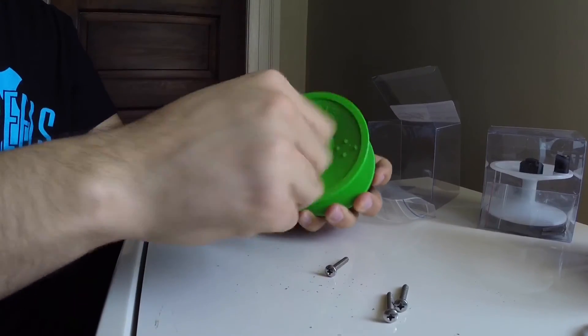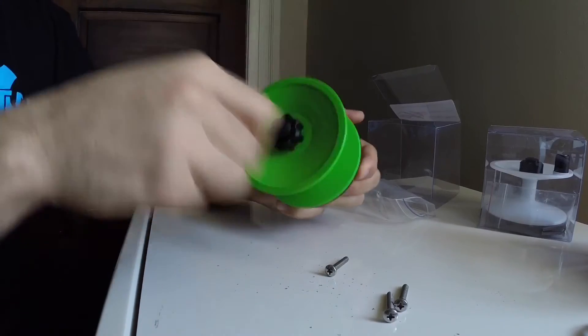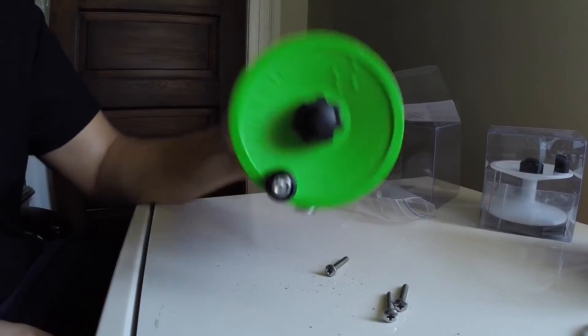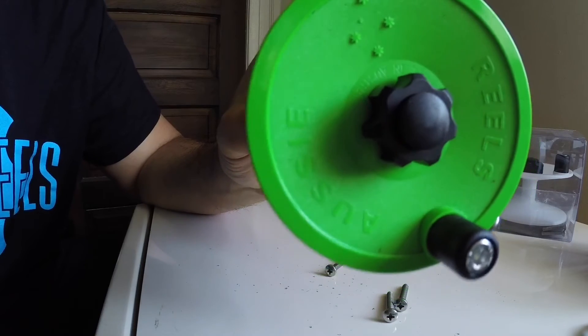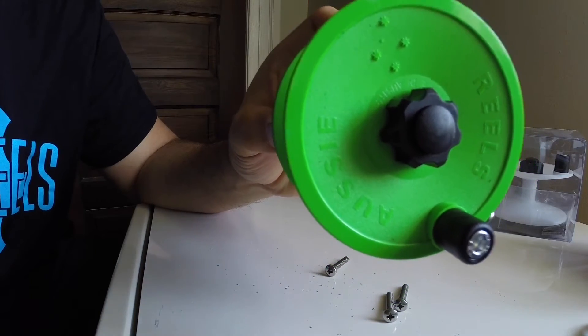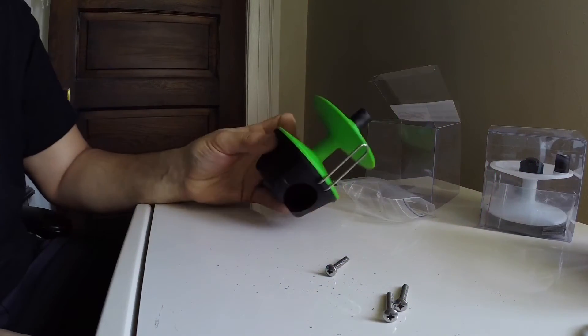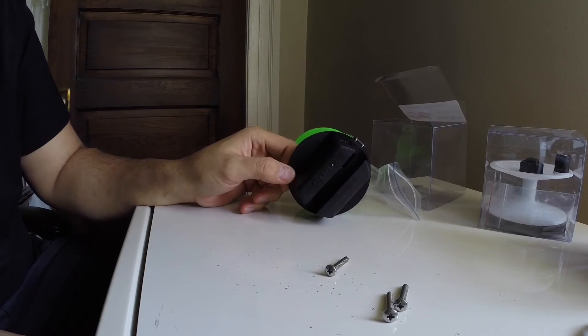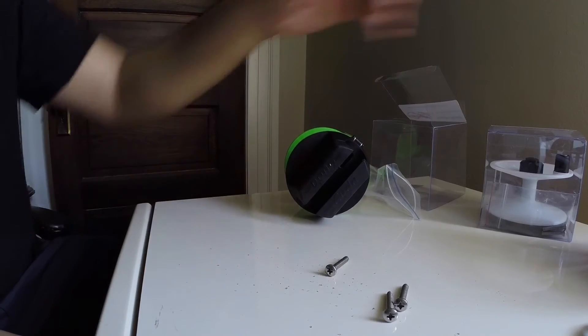So our reels have a five-year warranty on them. Anything goes wrong in the first five years, we've got you covered. If something were to happen after the five years, we're here with easily accessible parts. We can either give you a great discount on any of the parts. Anything goes wrong on your reel, we're here to take care of you.